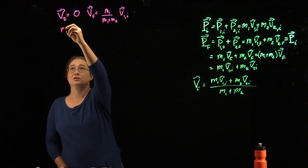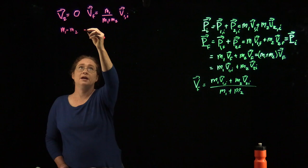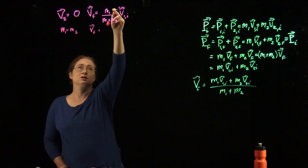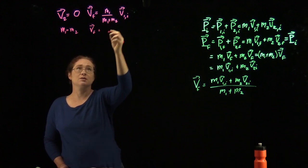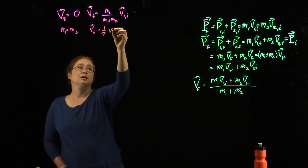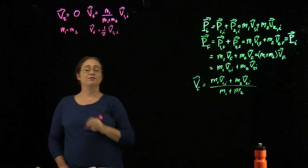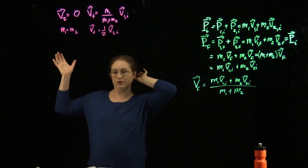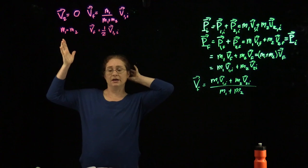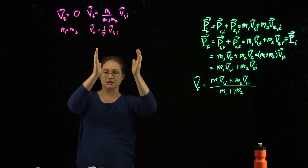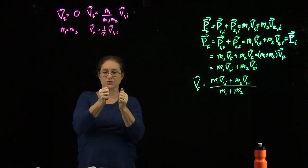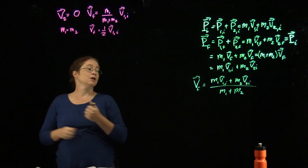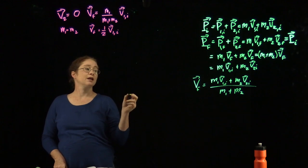What if m1 equals m2? In that case, when they stick together, the factor becomes one half, and the final velocity is one half of the initial velocity. So you have one ball come in, it smacks and sticks to another ball, and they fly off at half the velocity.